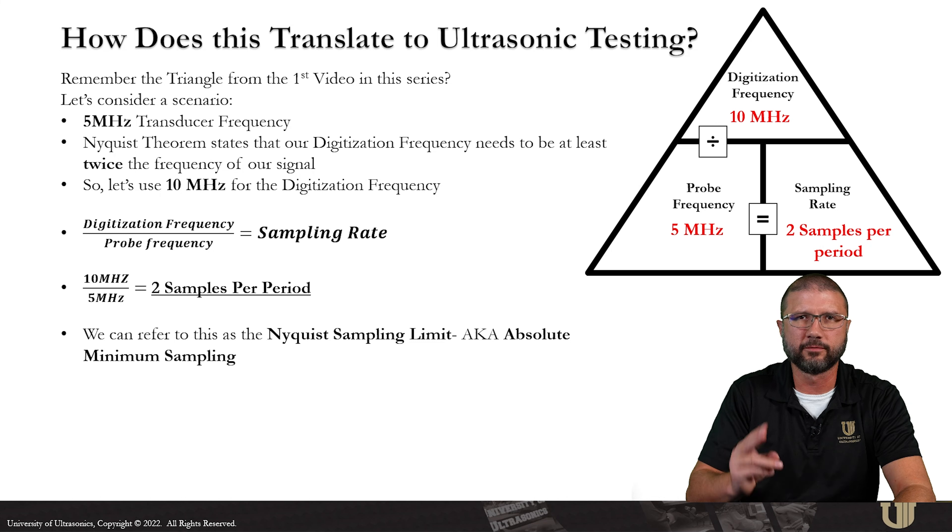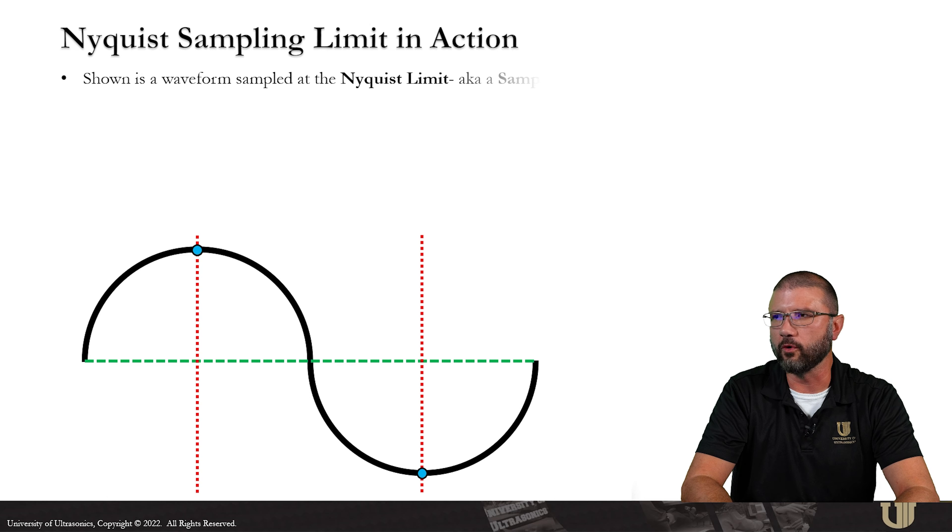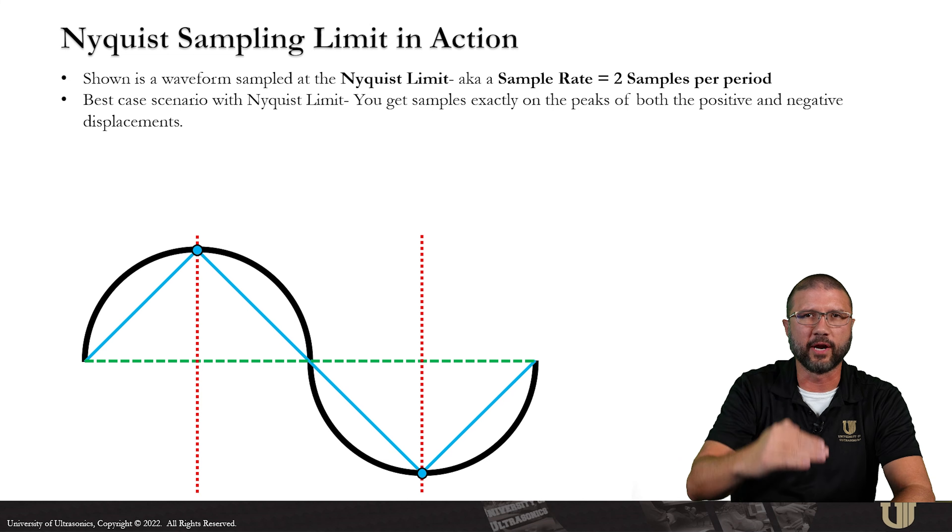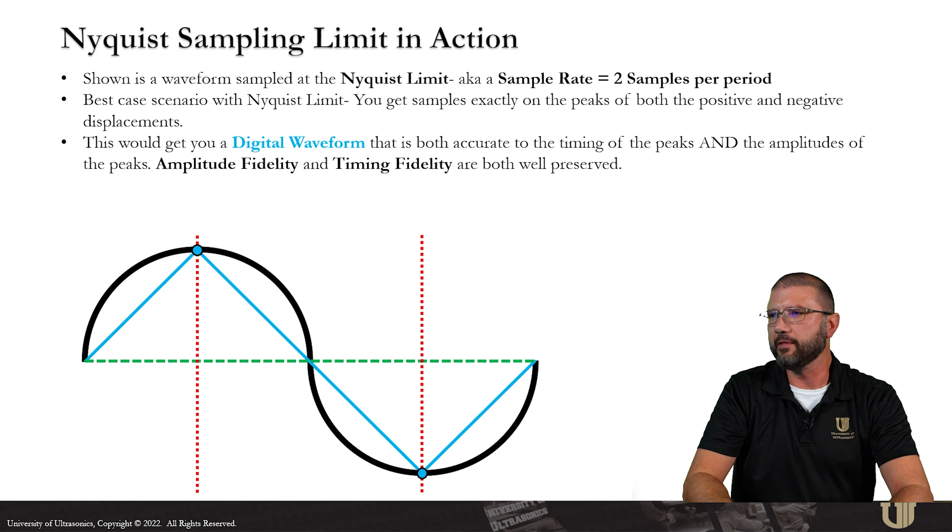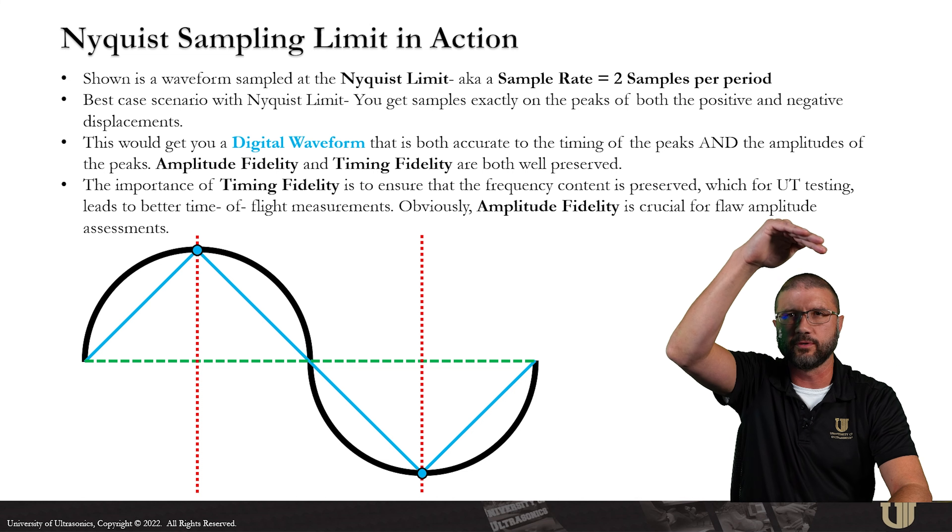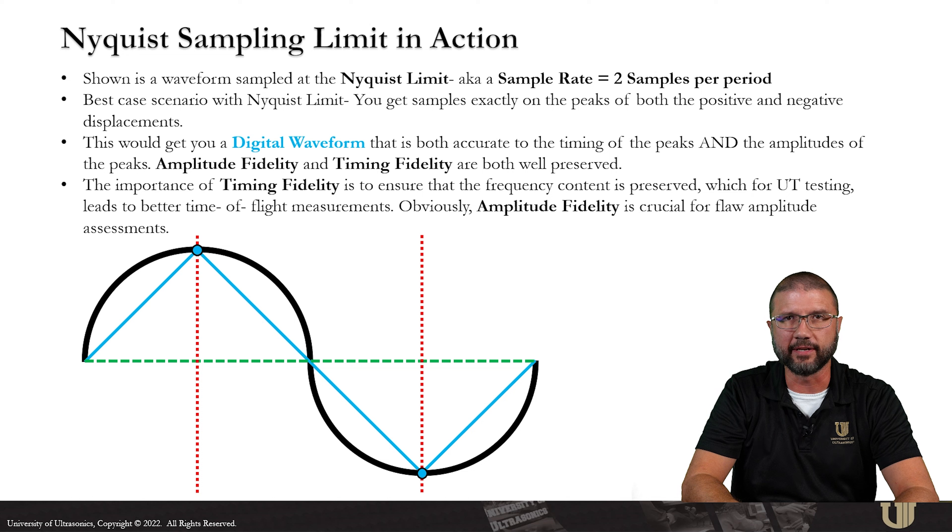So let's see what happens when we put the Nyquist limit in action. We're going to consider a waveform that is sampled at the Nyquist limit, which is going to give us two samples per period. Best case scenario, we get a sample directly on the positive displacement and directly on the peak of the negative displacement. This is going to give us a digital waveform that is both accurate to the timing of the peaks and the amplitude of the peaks. Amplitude fidelity and timing fidelity in this case would both be well preserved. The importance of timing fidelity is to ensure that the frequency content is preserved, which for UT testing leads to better time of flight measurements of our signals. And obviously amplitude fidelity is crucial for our flaw amplitude sizing assessments that we would do for certain code scenarios.